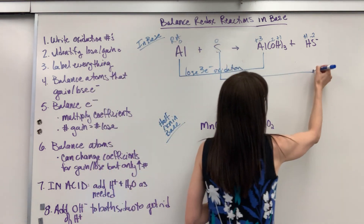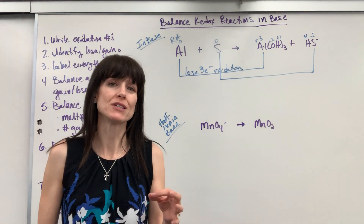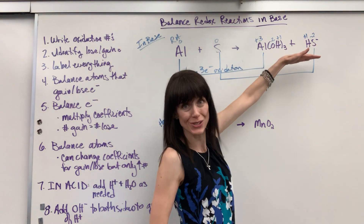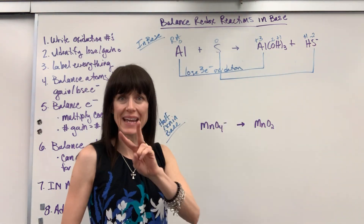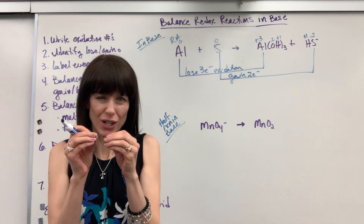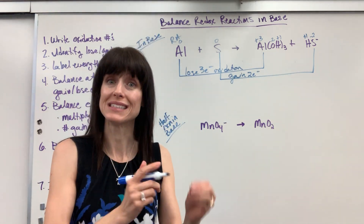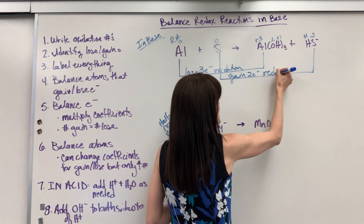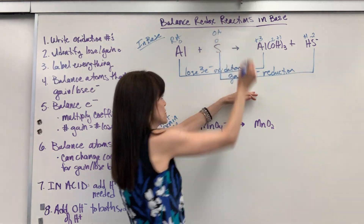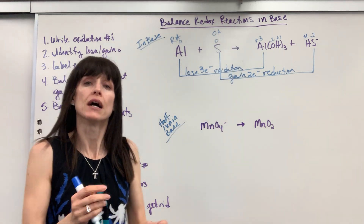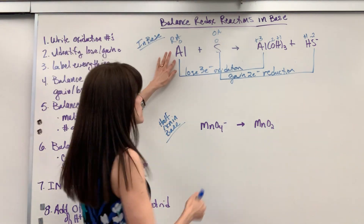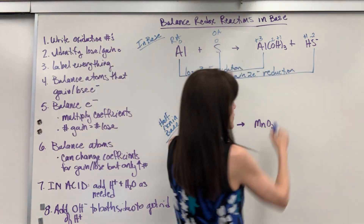Now sulfur goes from zero to minus two. Minus two means we have two extra electrons, so I go from a perfect zero up by two — we gained two electrons. GER: gain electrons, reduction. This is reduced — reduction. And whatever is reduced is the oxidizing agent. We've labeled everything. Let's double check that the atoms being reduced and oxidized are balanced: one aluminum, one aluminum; one sulfur, one sulfur. Good to go.